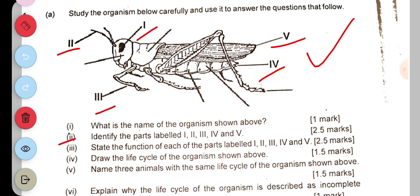The next question asks for the function of each of the parts. Part i, the compound eye, is for sight. Part ii, the antenna, is for detecting vibration. Part iii, the fore limb, is for movement.